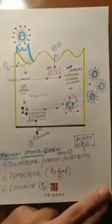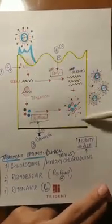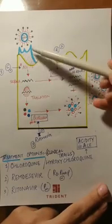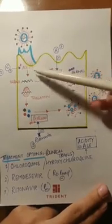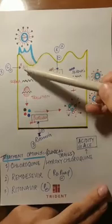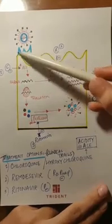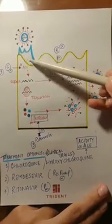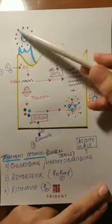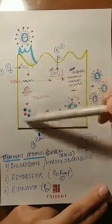This is the coronavirus and this is the type 2 pneumocyte with villi. These type 2 pneumocytes have an ACE2 receptor, that is angiotensin converting enzyme 2 receptor on the surface, and with the help of this receptor, this coronavirus will enter into the type 2 pneumocyte.